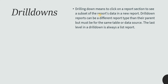The last level in a drill down is always a list report. What that means is if you click on a report with some data, it should drill down further based on that filter, and if you want further drill downs you can have them as well. But at the last level of drill down, it is always a list report.